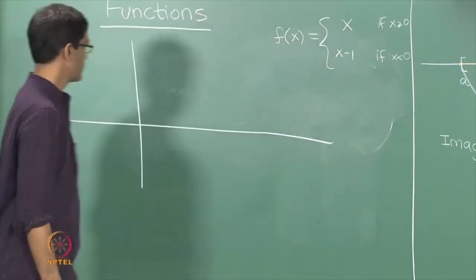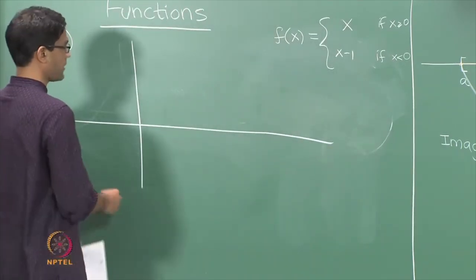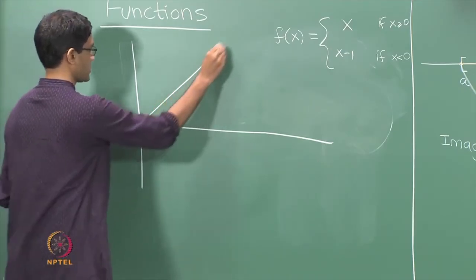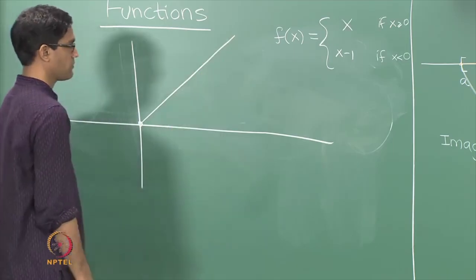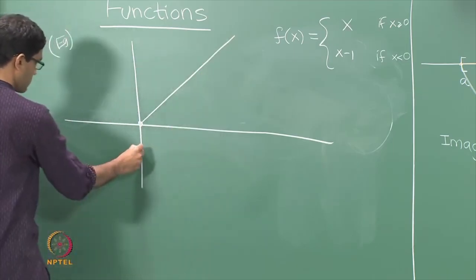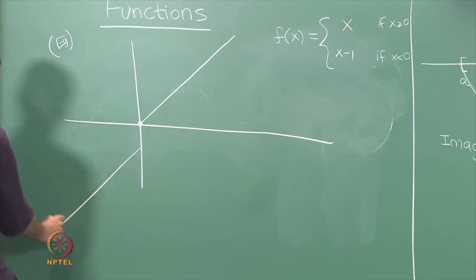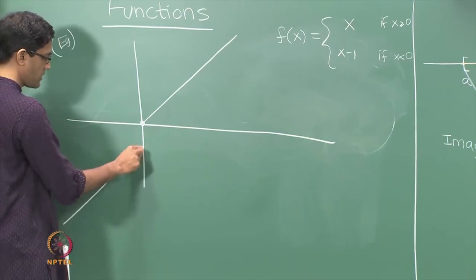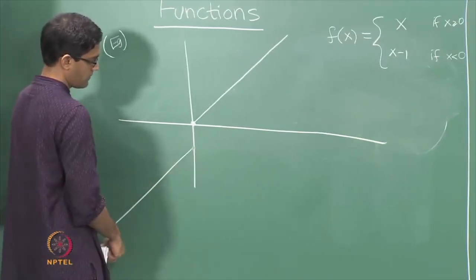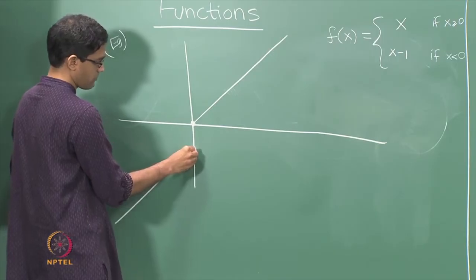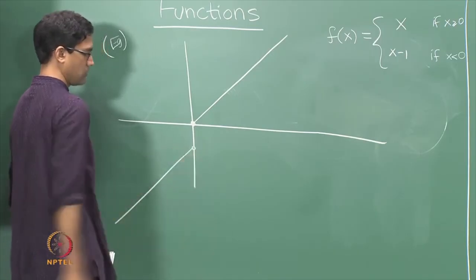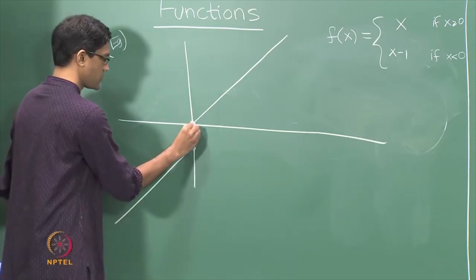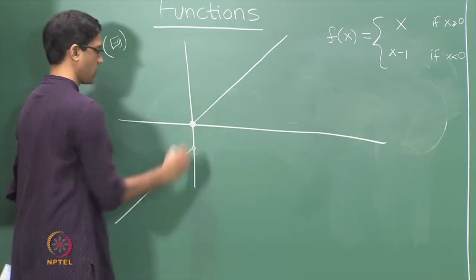It is a piecewise defined function. If you draw the graph, it is just the graph of the line y equals x when x is positive, and when x is negative it is more or less the same line just shifted down by 1. The key point to observe is that the point where the bottom line meets the y-axis is not on the graph — we denote it by an open circle — while the top piece is shaded in to indicate that this point is on the graph.